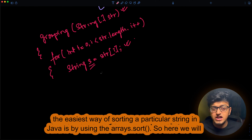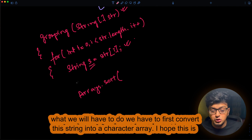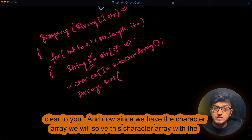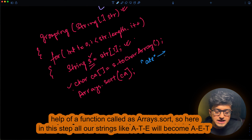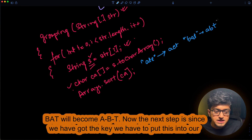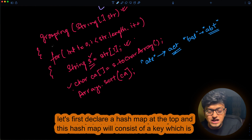The easiest way to sort a string in Java is using Arrays.sort(), but Arrays.sort() takes a character array, not a string. So we first convert the string to a character array, then sort that character array using Arrays.sort(). After this step, strings like 'eat' become 'aet' and 'bat' becomes 'abt'. Now we need to put these keys into our hash map, so let's declare a hash map at the top.